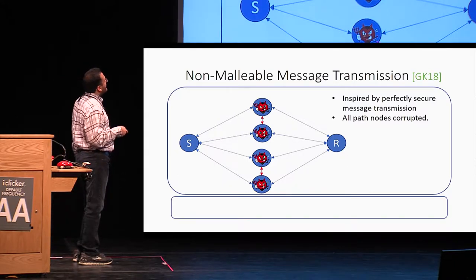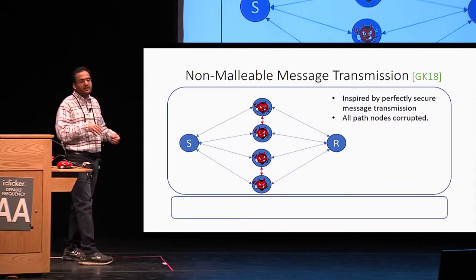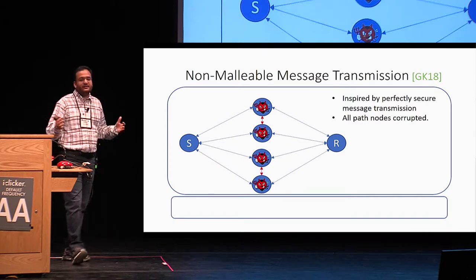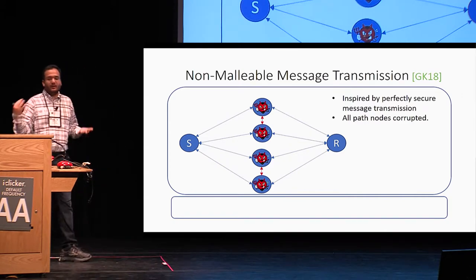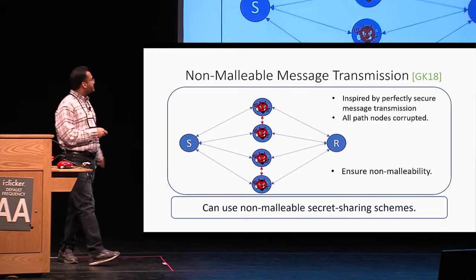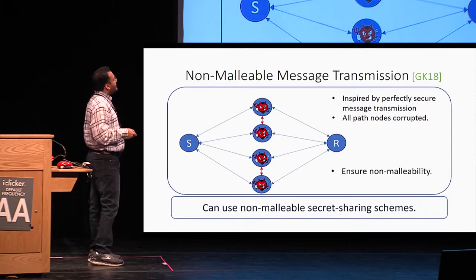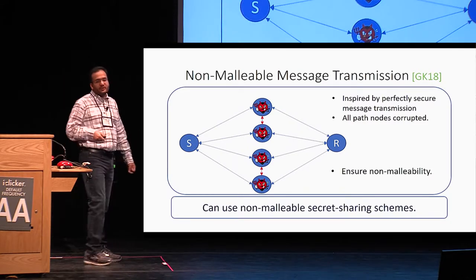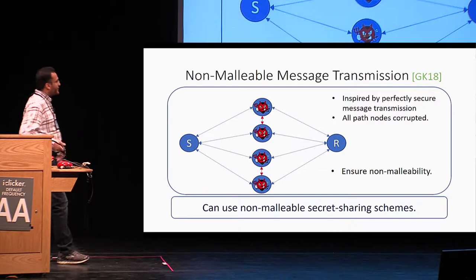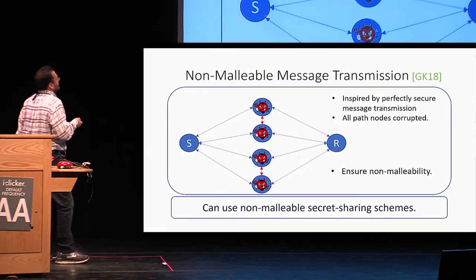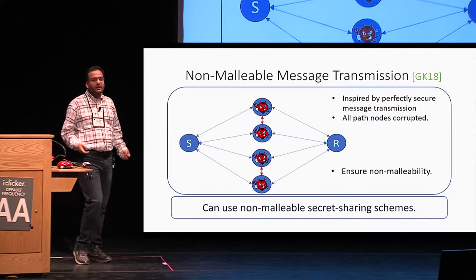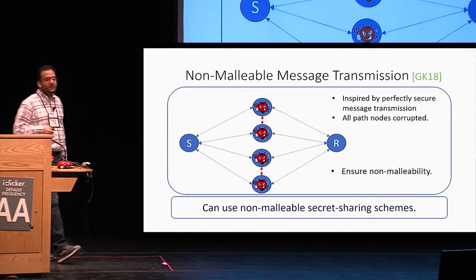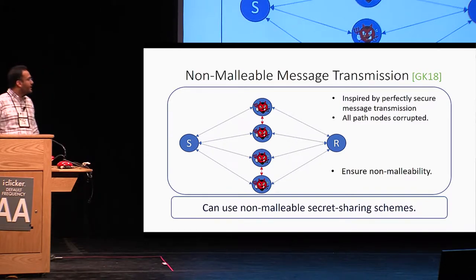In particular, these nodes are trying to change the message — if the message says 'attack,' they want to change it to 'defend' and vice versa. Our goal is to ensure the non-malleability property: either the adversaries don't modify the message at all, or the original message is essentially lost.